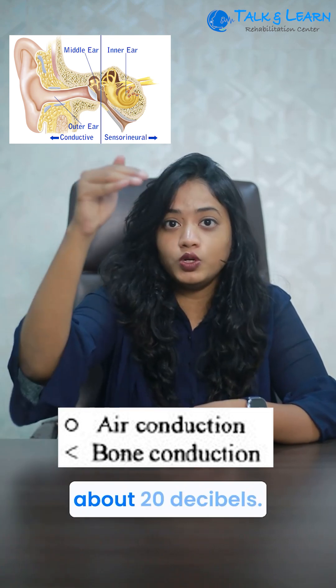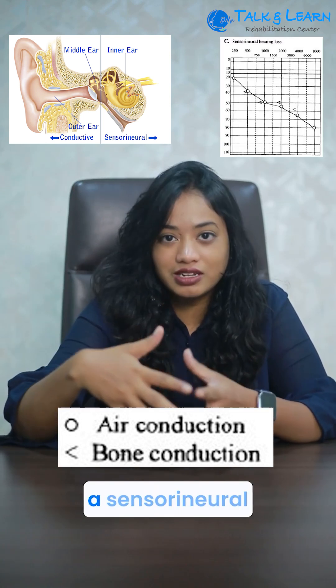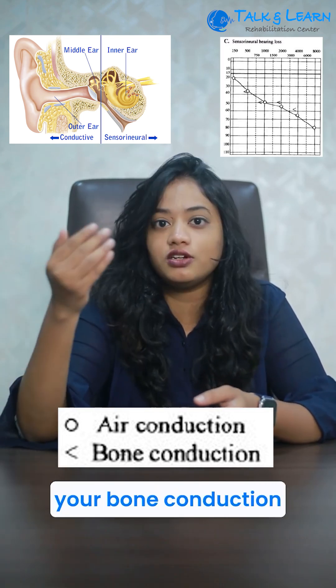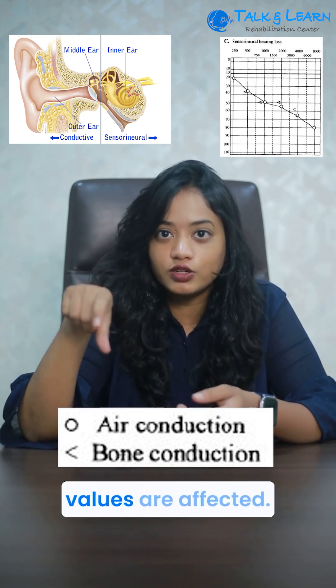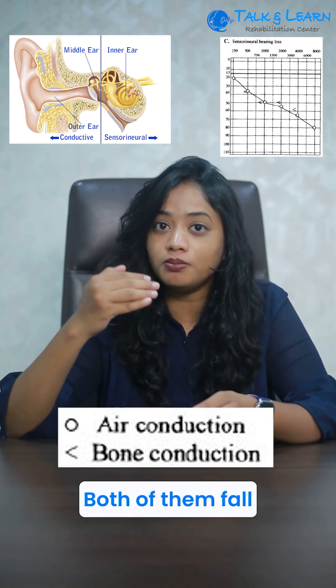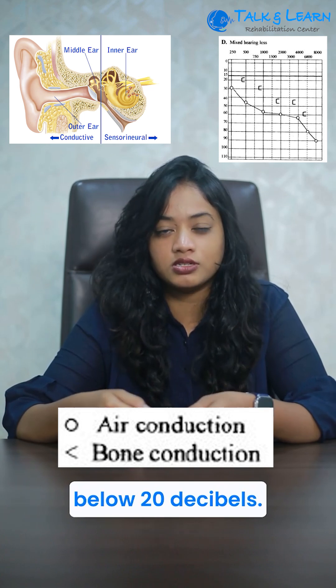When you have a sensorineural hearing loss, both your bone conduction and air conduction values are affected. Both of them fall below 20 decibels.